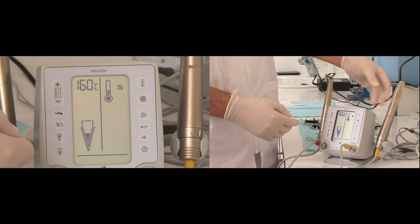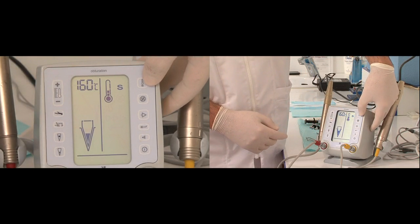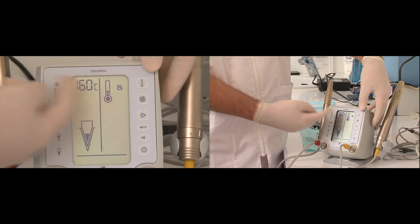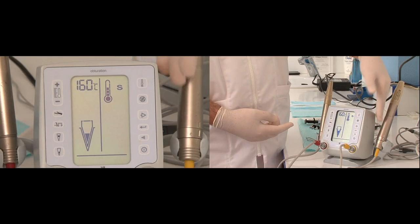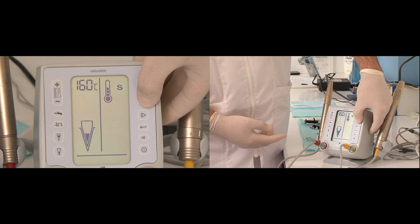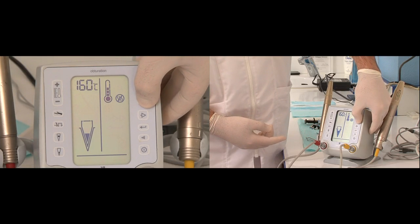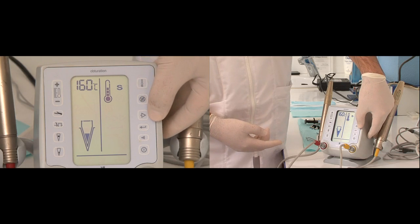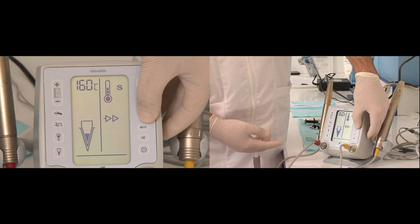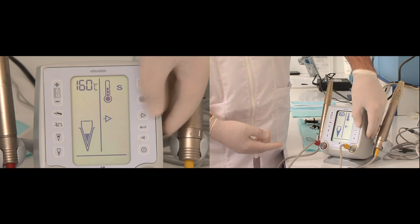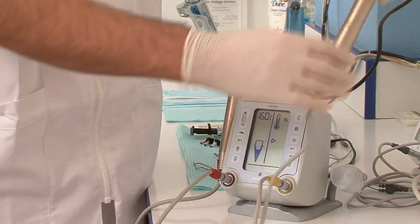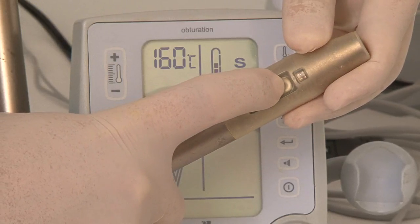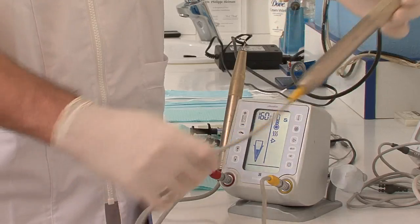Now the second part which is the extruder part. The first button is to launch the heating of the cartridge and you can see the SS showing. The second button is to choose which heating mode: one is for RealSeal, the second one is for no heat, and when we have no display it's for gutta-percha. This one is to choose the speed of extrusion. One speed for slow, two speeds for fast, and you can also control the speed by light: blue for fast and green for slow.